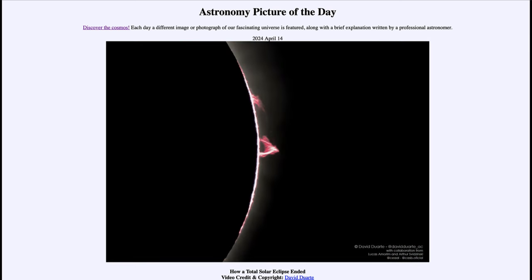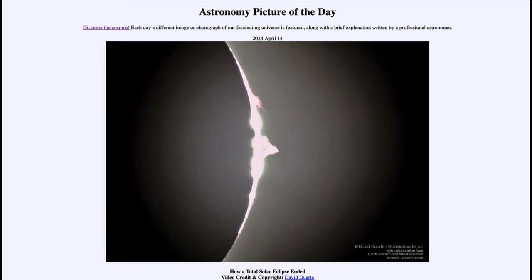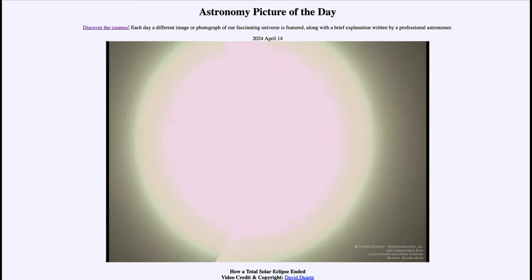When we see those prominences, we see the red color of hydrogen gas that is being excited by the energy of the sun and caused to glow.